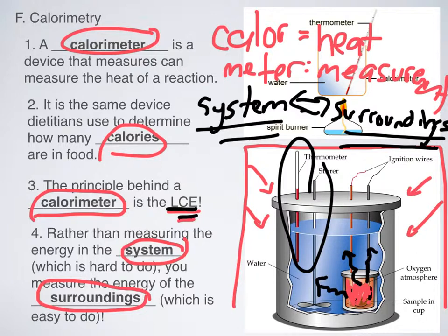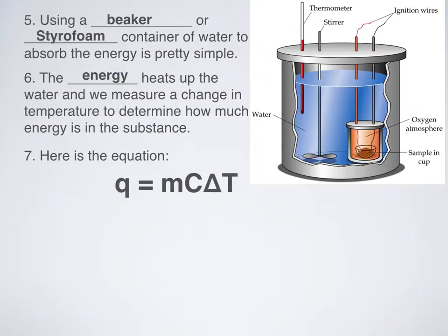And so by doing that, we can figure out how much energy is now in this water that wasn't there before. So the energy in here goes up. And we're assuming then that the energy in our system went down. And the amount that this energy in the system went down by is the exact same amount that the energy in the surroundings went up by because of the law of conservation of energy.